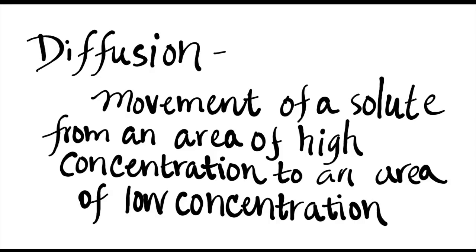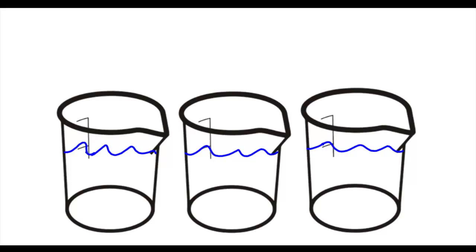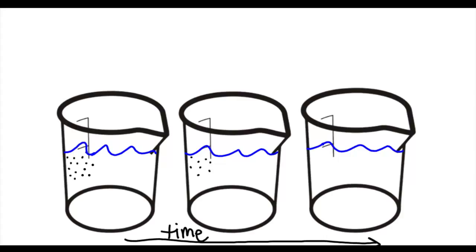Diffusion is the movement of a solute in solution from an area of high solute concentration to an area of low solute concentration. For example, if we have a solution and we dump in some salt, we're going to have a high solute concentration in the corner of the beaker. As time goes by, some solute molecules will be diffusing, moving from an area of high solute concentration to an area of low solute concentration, until eventually they reach equilibrium where they're randomly and evenly placed throughout the solution.